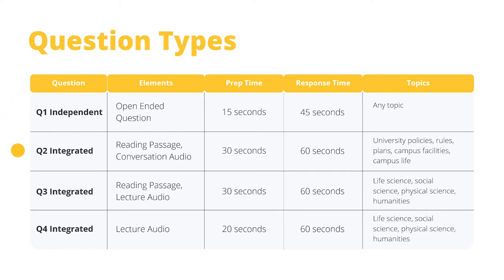Next you have the first integrated question which involves a reading passage and conversation audio. You have 30 seconds to prepare your answer and 60 seconds to speak, and this could be on university policies, rules, plans, campus facilities or just general campus life.